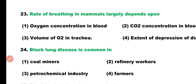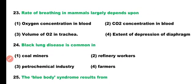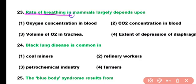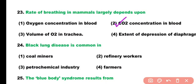Question number 23. The rate of breathing in mammals largely depends upon: oxygen concentration in the blood, carbon dioxide concentration in the blood, volume of oxygen in the trachea, or extent of depression of the diaphragm. Correct answer is option 2. The rate of breathing in mammals largely depends upon carbon dioxide concentration in the blood.